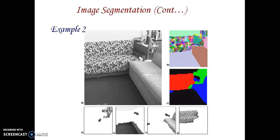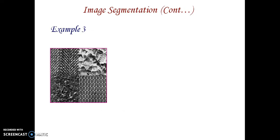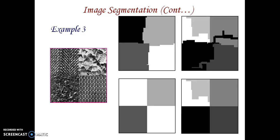That is example 2. In example 3, the image contains different textures — for instance, in a cloth we have different textures. If there are any flaws in a cloth, we are able to identify them with the help of segmentation. We are going to divide an image into 4 different partitions with 4 different colors to identify the regions.